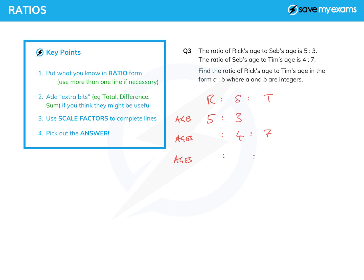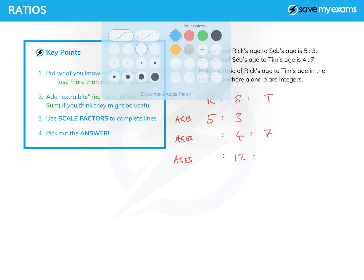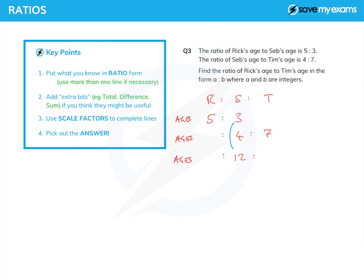So the lowest common multiple of 3 and 4 is 12. How do I know that? Well, actually, I've just multiplied 3 by 4, haven't I? And I've also multiplied 4 by 3. So there are my two scale factors, and I can now fill in this one and this one using the scale factors I've just worked out. So 4 times 3 is 12, and 7 times 3 is 21, and 5 times 4 is 20.